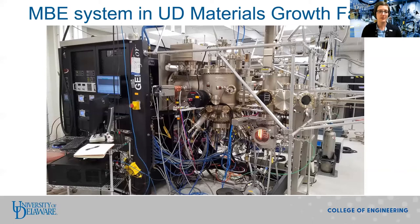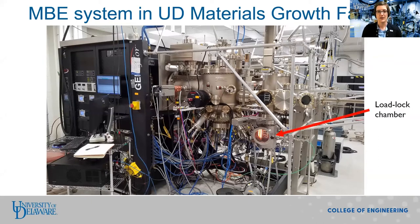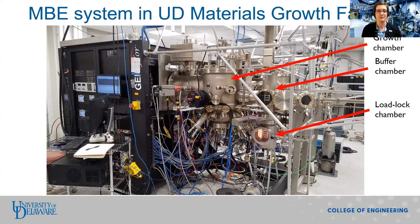We have multiple MBE systems at the University of Delaware, and they're housed in the Materials Growth Facility — a staff-supported user facility located in DuPont Hall. This photo shows one of our two MBE systems. The system is made up of a load lock chamber, where we load bare substrates before growth and unload our samples after growth. After loading, the substrates move into the buffer chamber before being placed into the growth chamber for deposition. We also have an electronics rack that houses all the power supplies for the machine, as well as a computer to control the film growth.